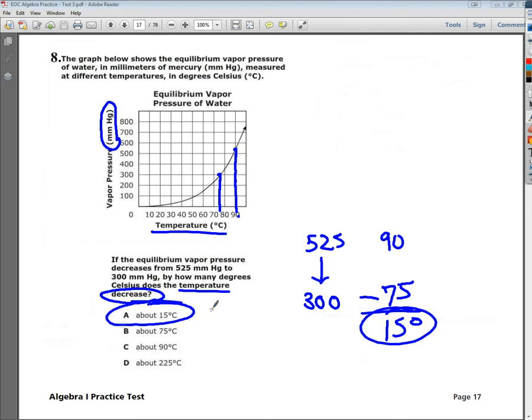Where do the other answers come from? B is the value of the temperature when it's at 300 millimeters of mercury, so it matches it. They want you to try to jump at that one because now I'm here so it matches to this. This one is the first, this matches to 525, that's where the 90 comes from.